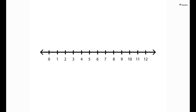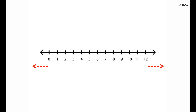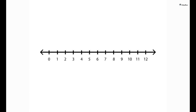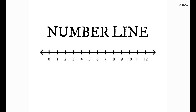What's this? Well, it looks like a line with some numbers on it. What else can you say about it? Well, firstly, these numbers are equally spaced or equidistant from each other. Moreover, this line extends in both directions infinitely. All the numbers can be represented on this line and so we call it the number line.